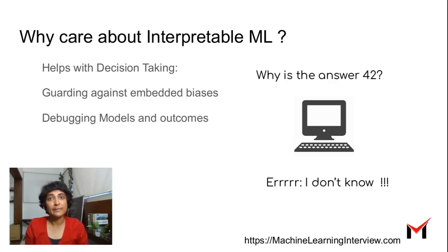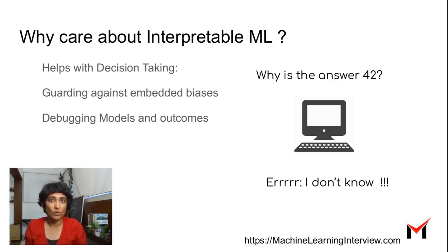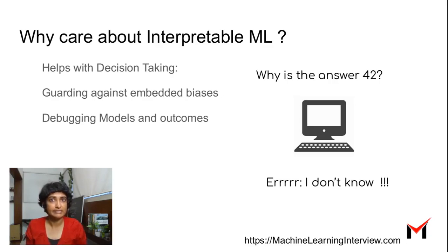Guarding against embedded biases. When we look at what our model is doing underneath — which features are important — we can sometimes uncover hidden biases. For instance, if the model is giving undue importance to a feature like zip code where we don't expect it to, we immediately know something is wrong and that our data might be biased.